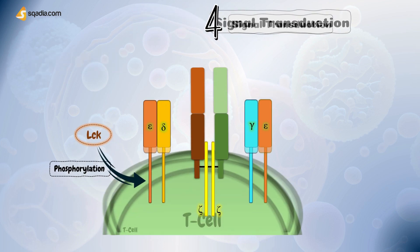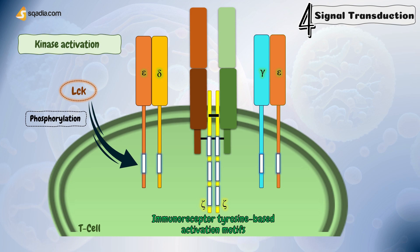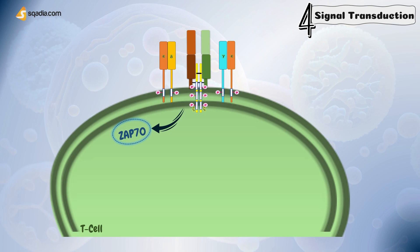The next step is kinase activation. LCK, that is lymphocyte-specific protein tyrosine kinase, phosphorylates specific sites found on the cytoplasmic tails of the CD3 complex chains. These special sites are called tyrosine-based activation motifs, or ITAMs. These ITAMs get phosphorylated by LCK, and this phosphorylation recruits and activates another kinase called zeta chain associated protein kinase 70, or ZAP70. ZAP70 is crucial for transmitting signals downstream of the TCR.